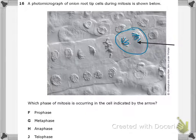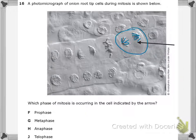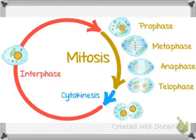We look at our answer choices: prophase, metaphase, anaphase, and telophase. These are the four main parts of mitosis, so let's look at each of those in turn.